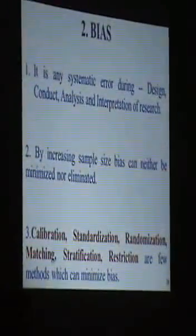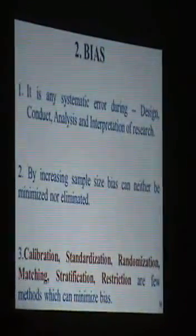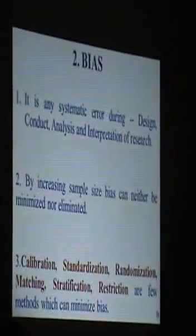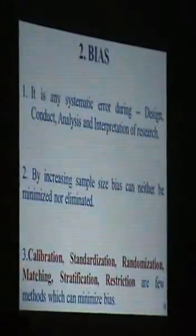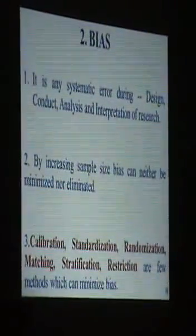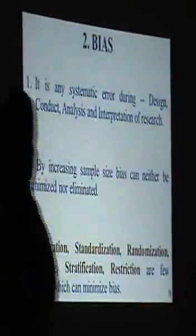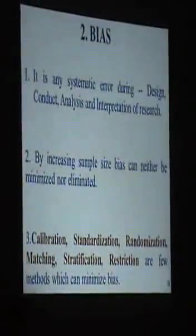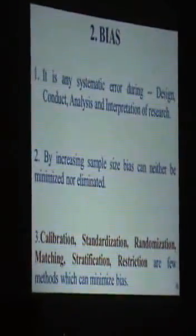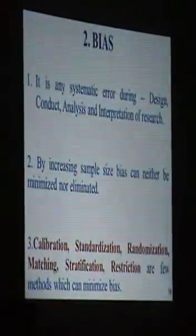The second type of error is bias. As I said, bias is a systematic error, not like random error. Random error is unpredictable, unsystematic. We cannot understand how it deflects the result. But bias is very systematic. It pulls the results either towards positive or towards negative side, consistently, accurately or correctly to the precision. By increasing sample size, never think you can reduce bias. By increasing sample size, you can reduce random error. But by increasing sample size, bias cannot be reduced. Bias continues just like that, irrespective of your sample size.